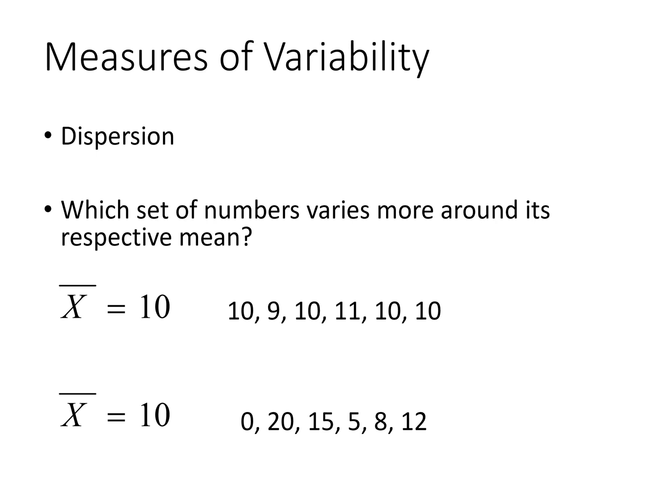So basically, measures of central tendency give you an idea of what is typical or average or common in a data set, whereas measures of variability give you some idea of how much dispersion or how much variability you have in a data set.